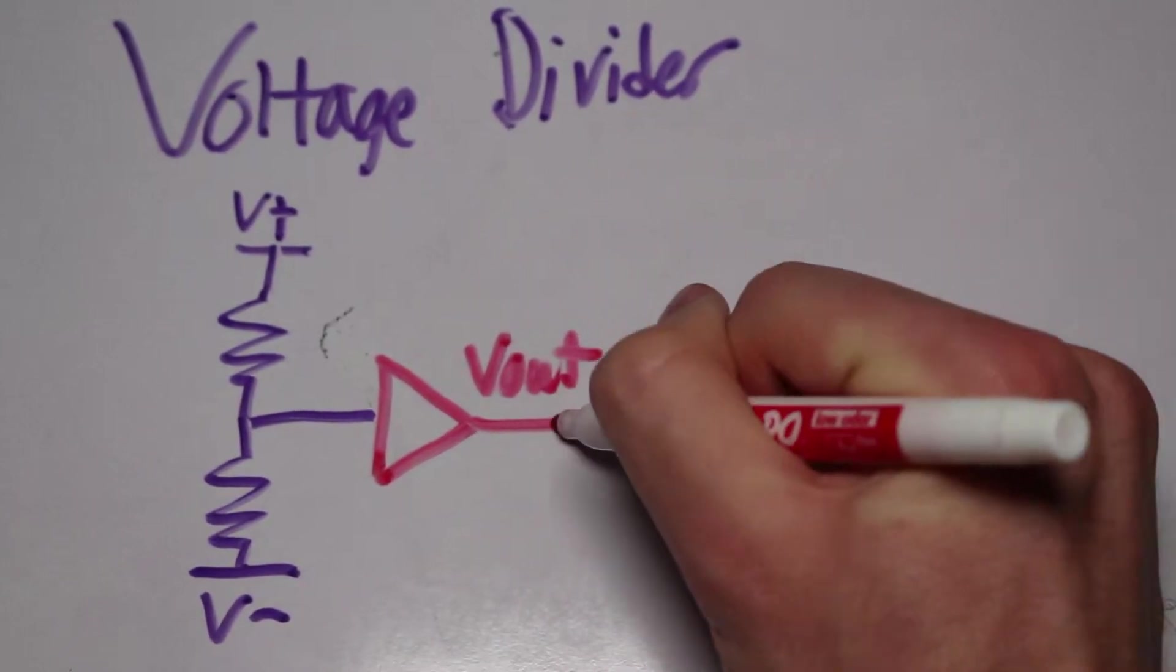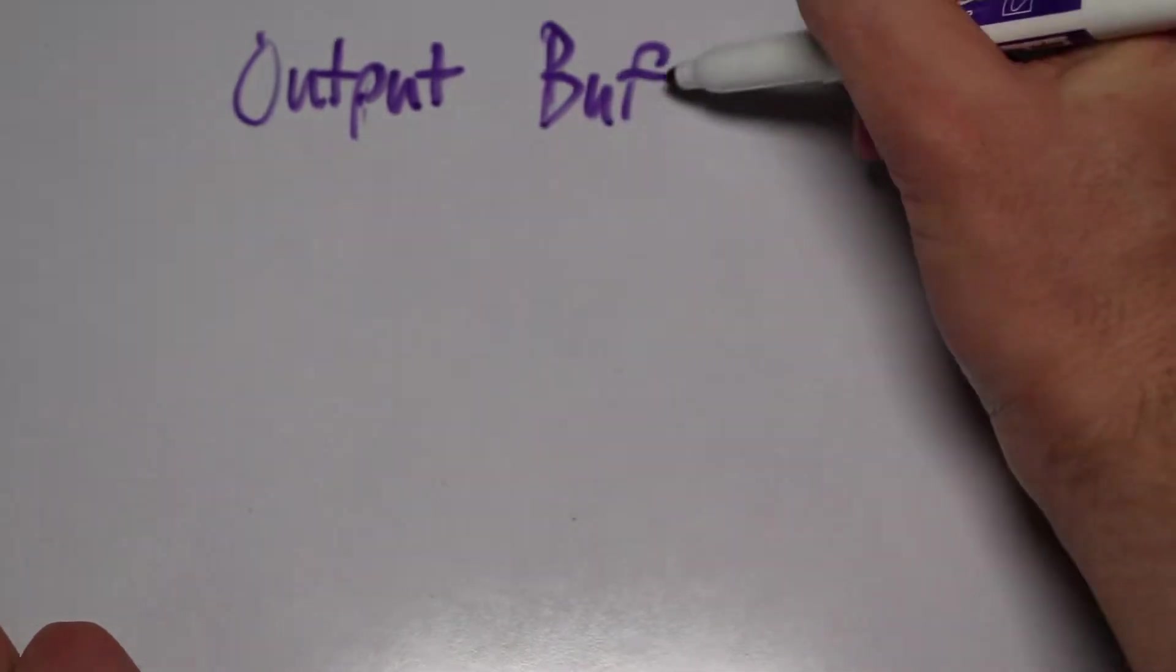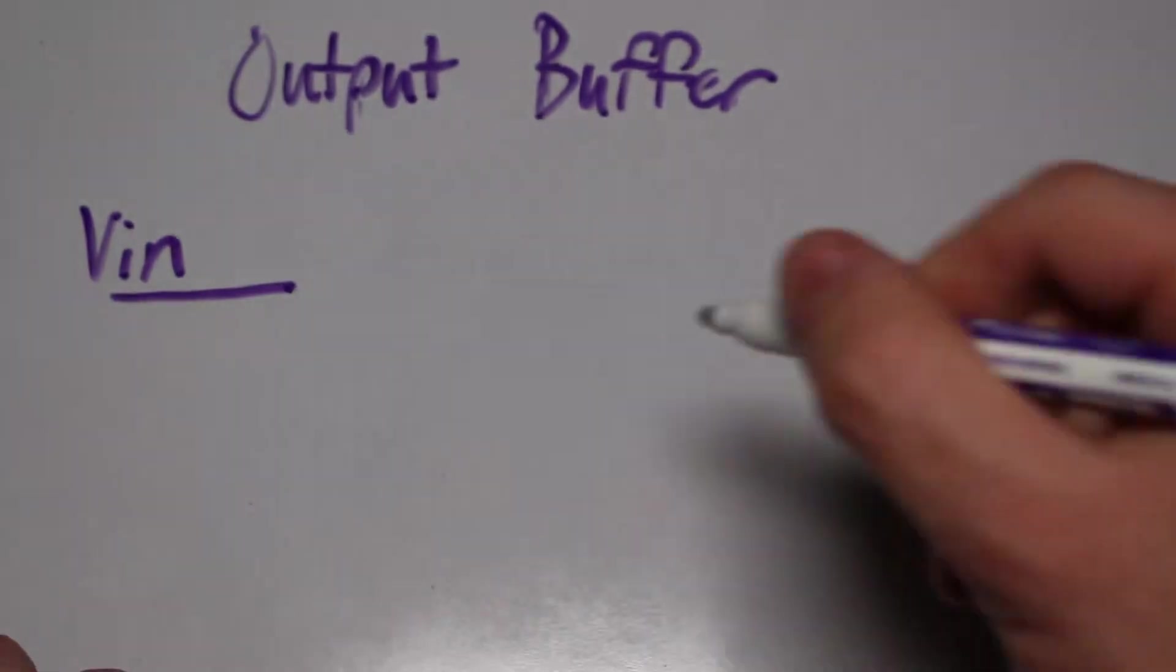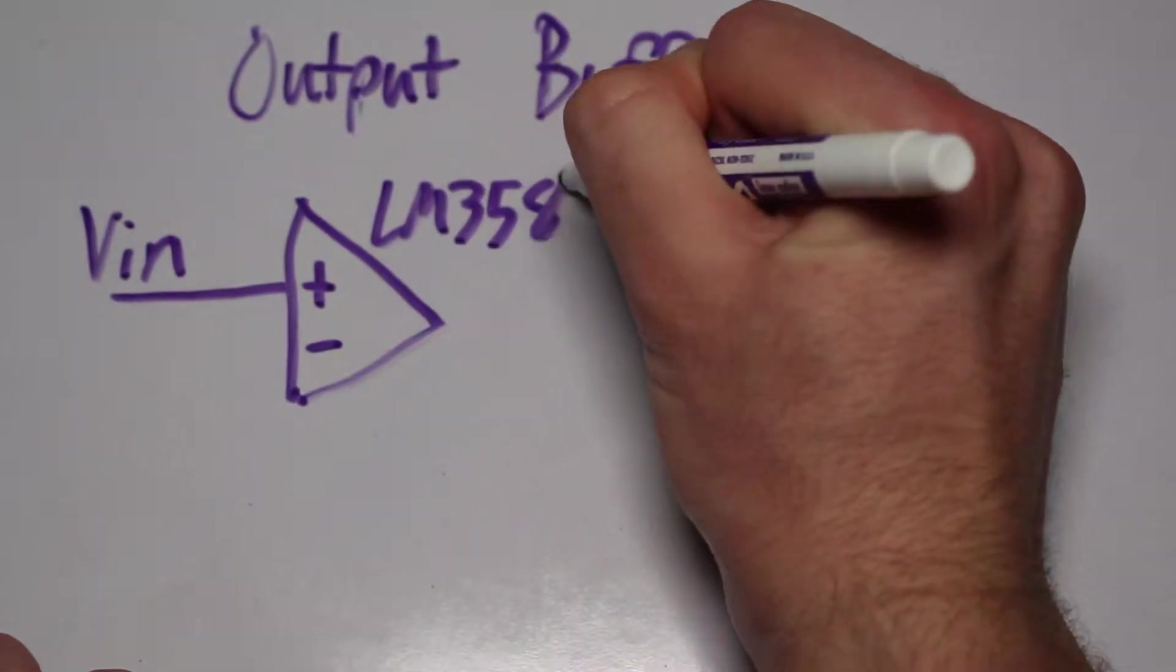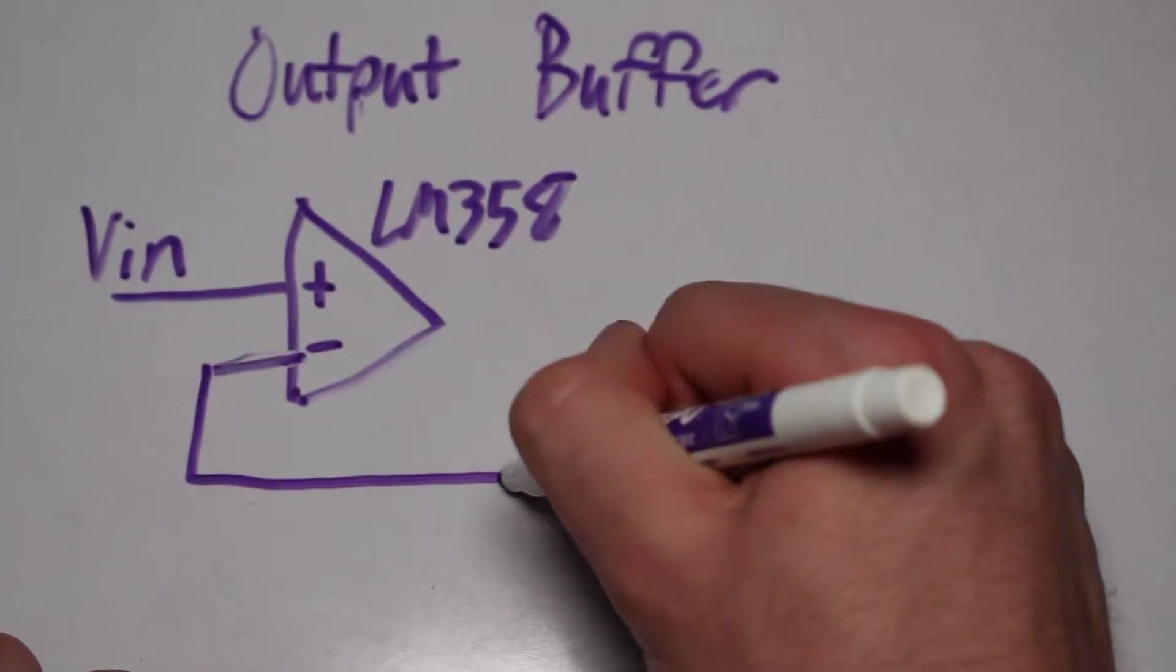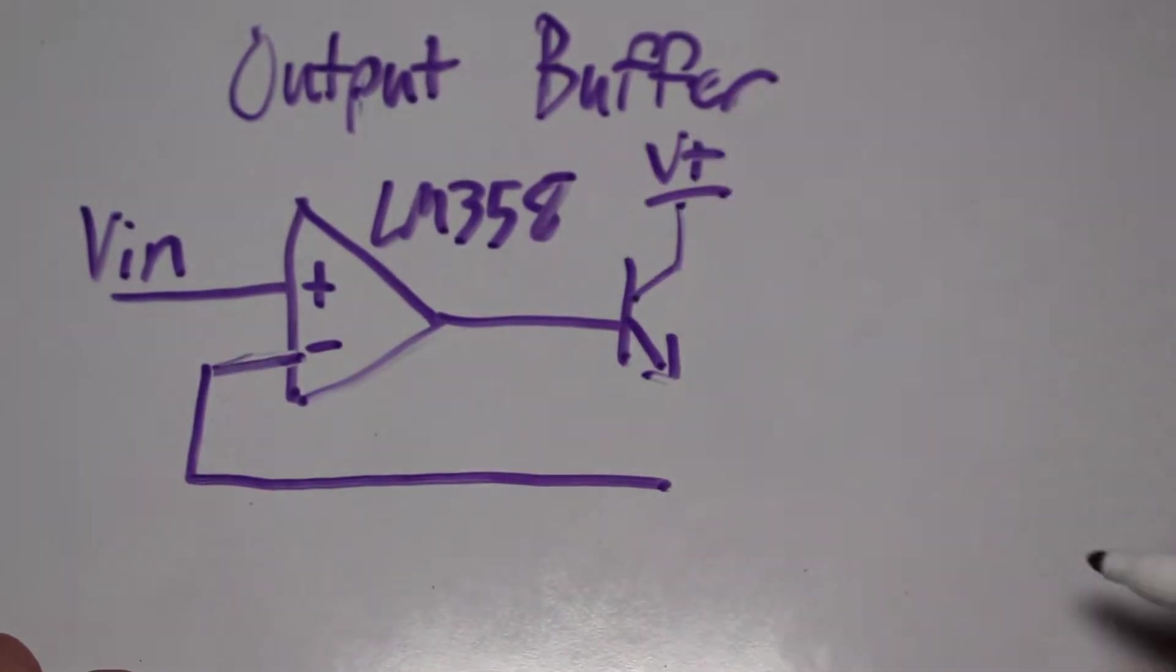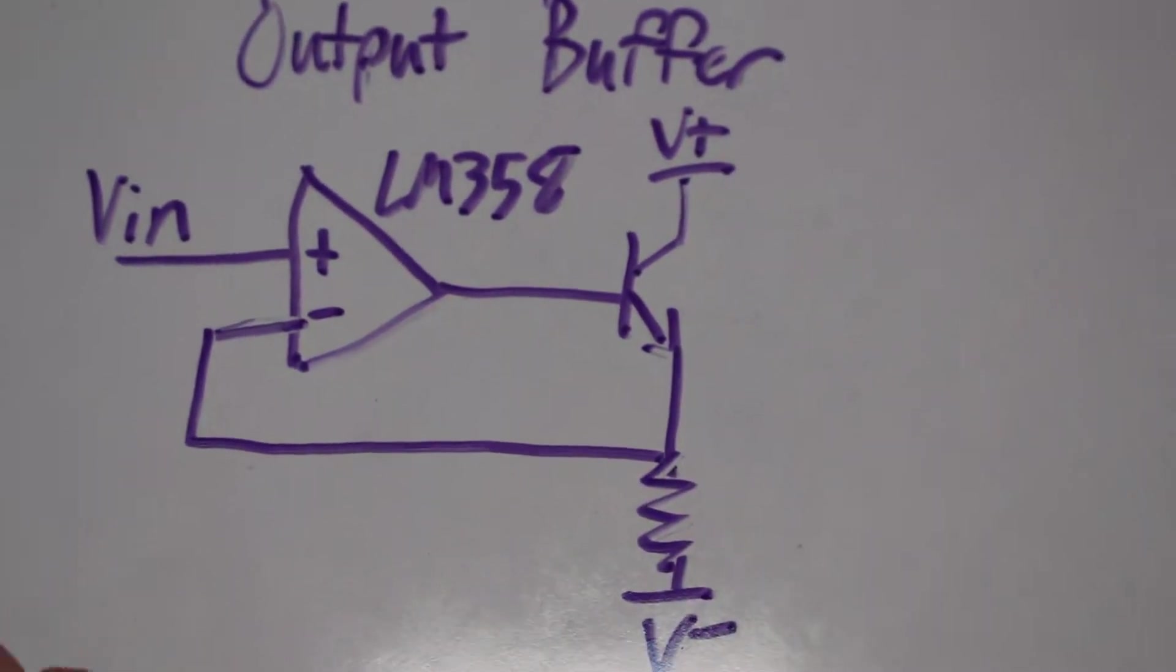We can make such a buffer by using an op-amp and a transistor. Remember, the op-amps will try to keep their inputs equal. So the op-amp will drive the transistor to match the voltage of the resistor divider. If you want to learn more about how this op-amp circuit works, feel free to check out my previous video on op-amps.